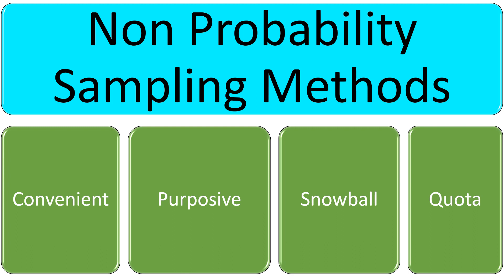Non-probability sampling methods can be divided into four types: convenience sampling, purposive sampling, snowball sampling, and quota sampling. Let's discuss them one by one.